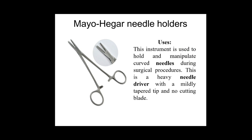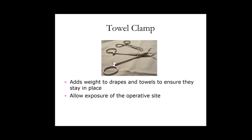The next one is the Mayo-Hegar needle holder. This is another type of needle holder used to hold and manipulate curved needles, especially used for curved needles during surgical procedures. This is a heavy needle driver with a mildly tapered tip and no cutting blades. The last one is the towel clamp — during a procedure we use towels to cover the body, add weight to drapes, and ensure they stay in place to allow exposure of the operative site. This completes today's topics. Please like, subscribe, and thank you for watching.